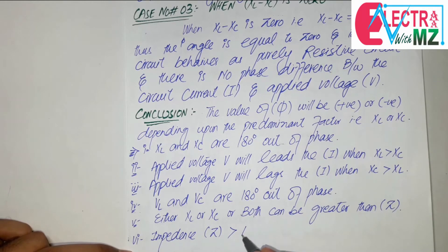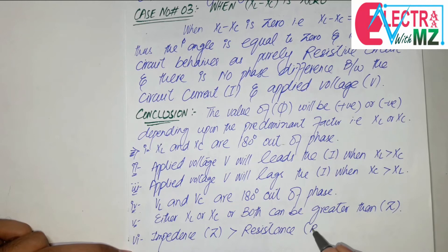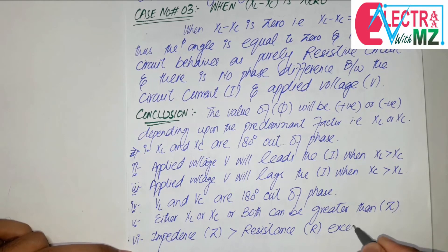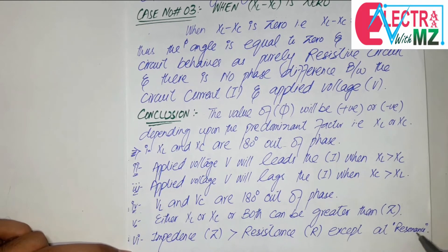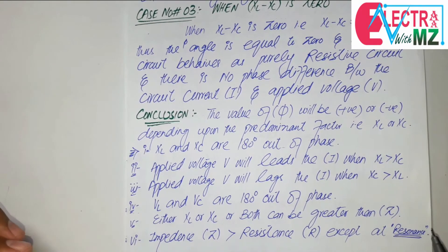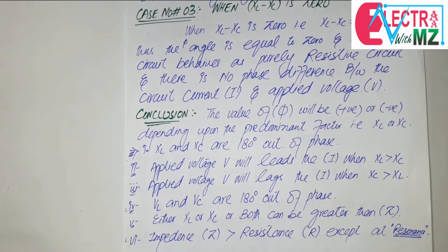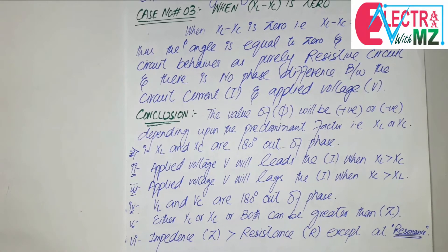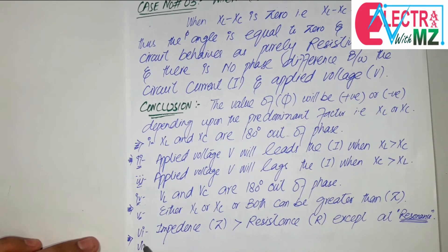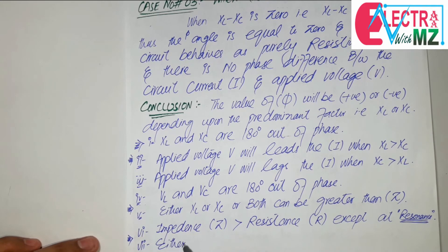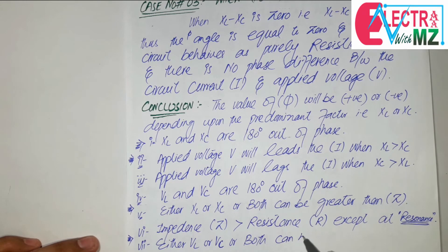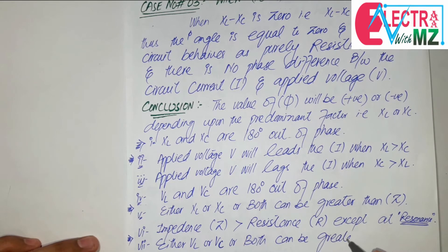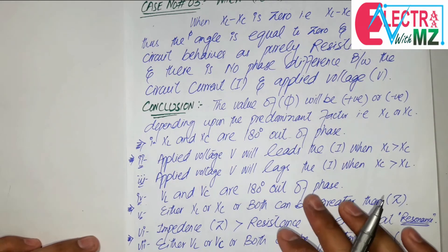Impedance Z is always greater than resistance R, except at resonance. In the upcoming videos, I will briefly explain resonance and what is series resonance circuit. Also, either VL or VC or both can be greater than the applied voltage V in case of RLC series circuit.